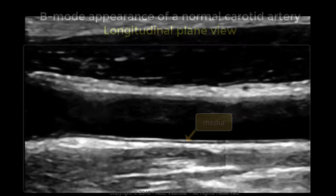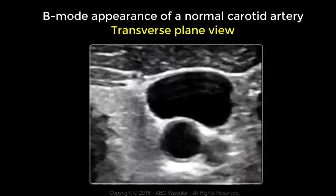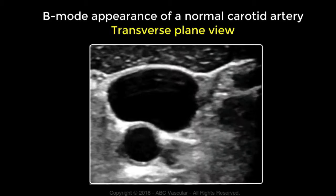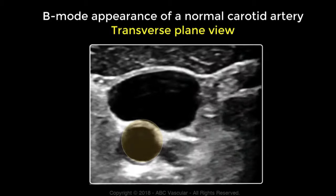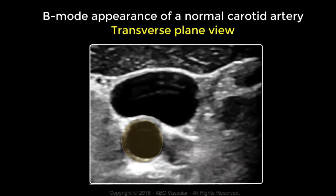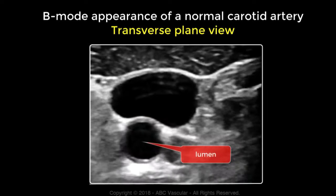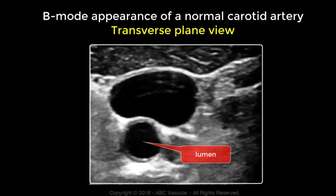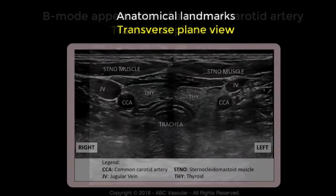The ultrasound appearance of the artery using a transverse plane is different from the longitudinal one. In transverse view, the artery appears as a cross-sectional area, as indicated by the yellow circle. As in the longitudinal view, the lumen is anechoic while the walls are hyperechoic.